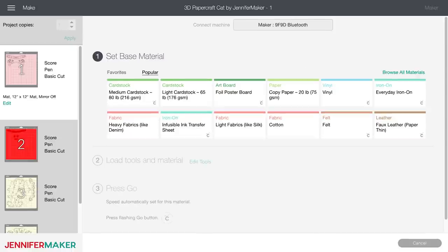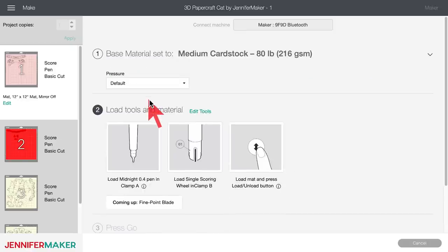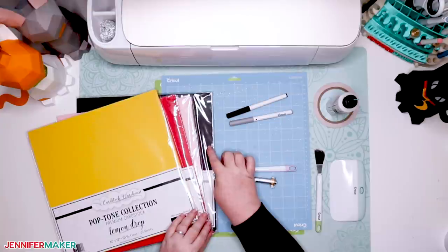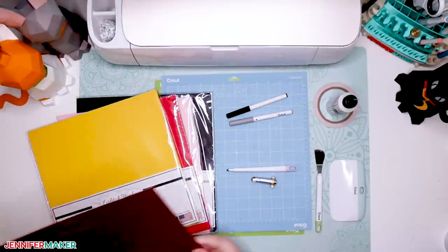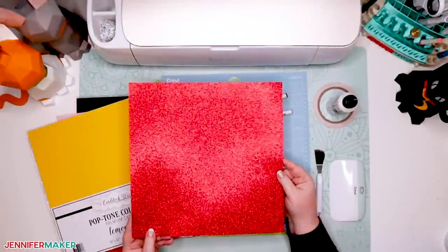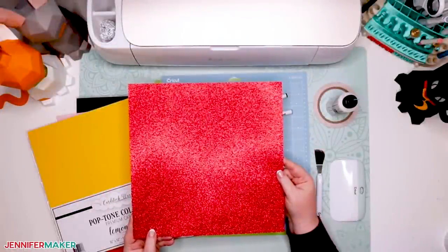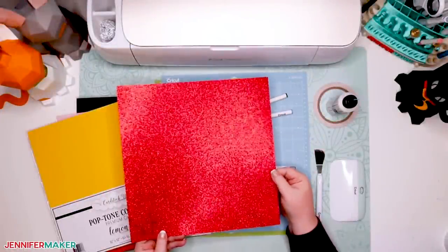Now click continue and choose your material. If you're using 65 or 80 pound cardstock as I am, you can choose medium cardstock and give it a little extra pressure. I recommend you use a smooth or very lightly textured cardstock for the best results. Heavily textured and glitter cardstocks will be really hard to score and glue. So please avoid them unless you're ready for a real challenge.